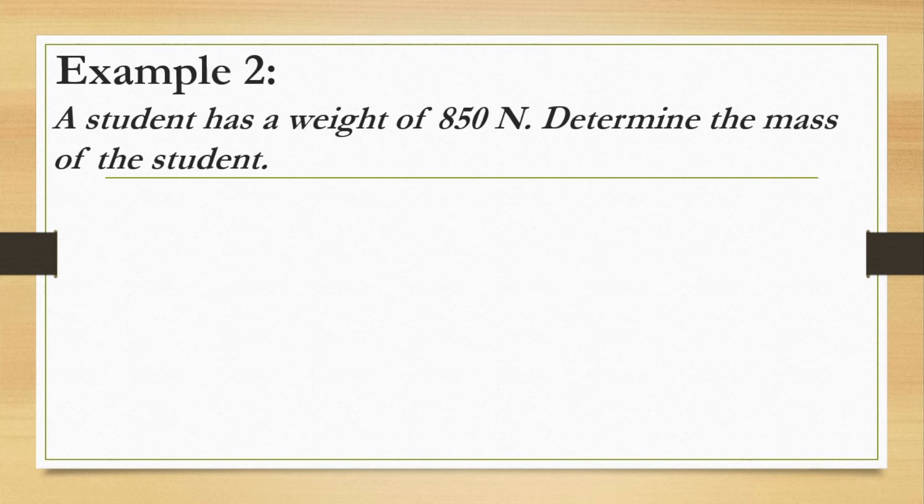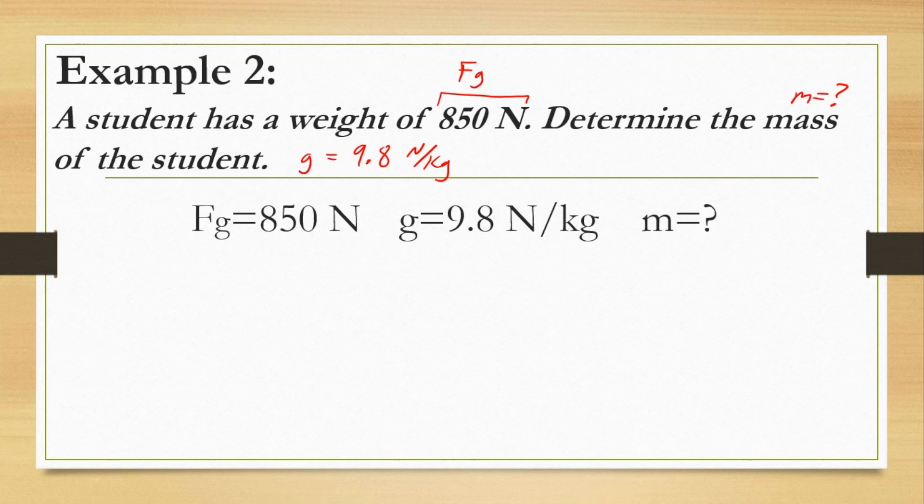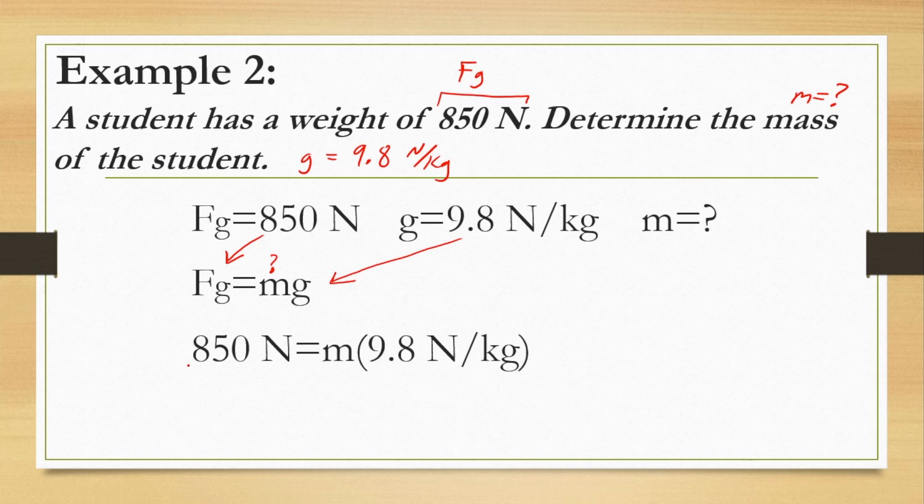Let's look at our last example. A student has a weight of 850 newtons. So this is telling me weight. So this is my force gravity. Determine the mass of the student. So it wants me to determine that. So I don't know what my mass is. Again, I can assume that this student is on earth. So my G is 9.8 newtons per kilogram. Go ahead and list all those variables down below. Force gravity is 850. Little g is 9.8 and mass is unknown. Here's my equation. Plug everything in again. This time I see I have 850 on the left, G on the right, and my unknown right here. So instead of multiplying I'm going to have to divide this time. Plug in my numbers and then I divide by 9.8 on each side. Simplify and I get mass is equal to 86 kilograms.